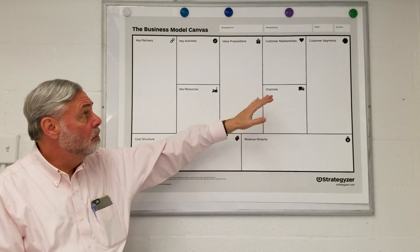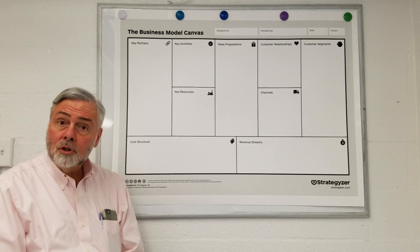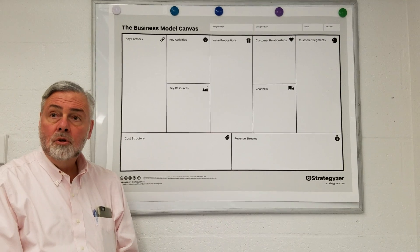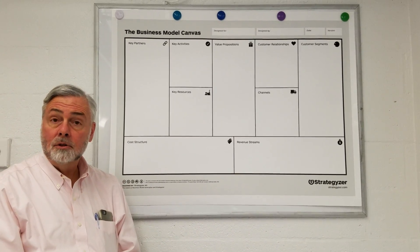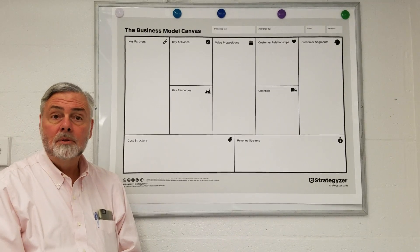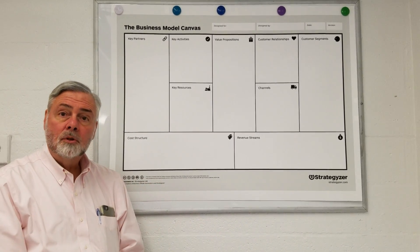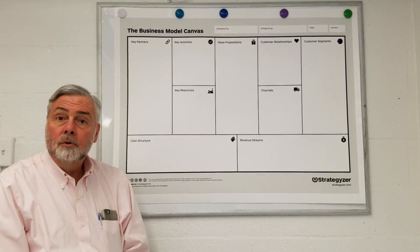After that, work on the other elements. Channels is how you touch customers on a regular basis — typically that's sales channels, but it might also be maintenance or distribution channels. If you have a physical product, how do you get it to the customers? If it's a web product, the sales channel is typically through the internet, through a website or portal. If you're selling kombucha, you need distribution through supermarkets or health food stores.